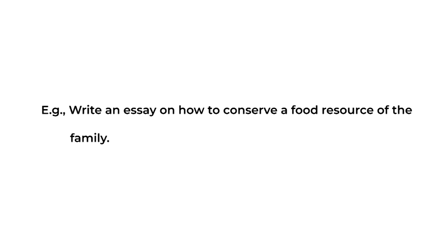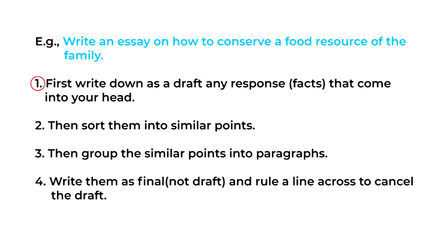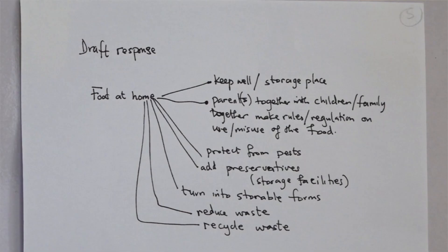Let's look at an example of how to answer a theory question. The question is: 'Write an essay on how to conserve a food resource of the family.' Here is how you go about it: first, write down as a draft any facts that come into your head. Second, sort them into similar points. Third, group the similar points into paragraphs. Fourth, write the final answer and rule out a line to cancel the draft.